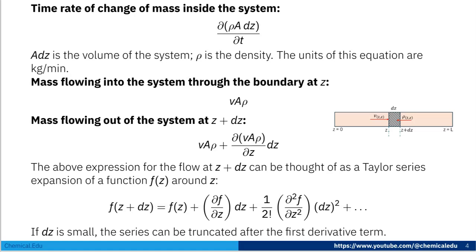For this segment we do the mass balance. Time rate of change of mass inside the system is ∂(ρAdz)/∂t, where Adz is the volume of the system and ρ is the density. The units are kg per minute. Mass flowing into the system through the boundary at z is vAρ.